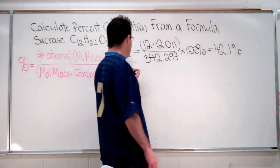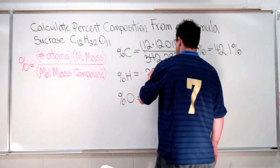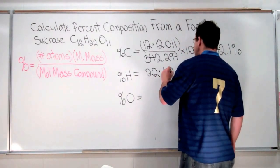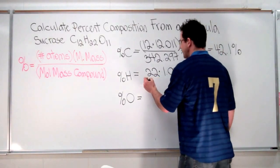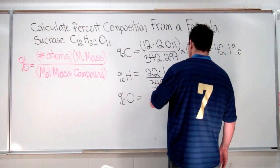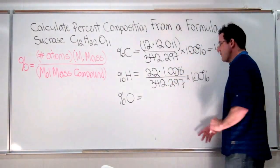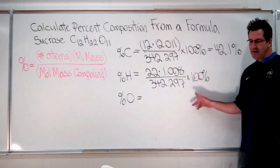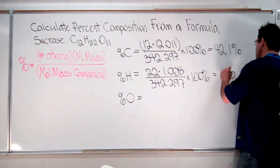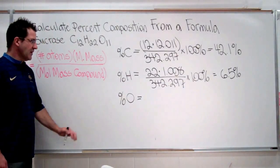So you can see here, hydrogen, we have 22 times the molar mass of hydrogen. We can look again on our periodic table, 1.008, divided by the molar mass of the entire compound again, 342.297. And if we do that and we multiply it by 100 again, we get that the percent composition of hydrogen is 6.5%. Alright.